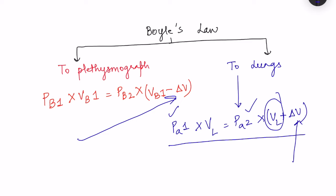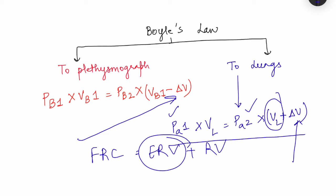That covers the measurement of functional residual capacity. Importantly, once FRC is measured, we can also determine residual volume, since FRC = expiratory reserve volume + residual volume. Expiratory reserve volume can be measured using a spirometer, so by subtracting it from the measured FRC, we can determine the residual volume as well.